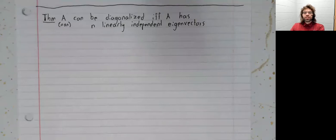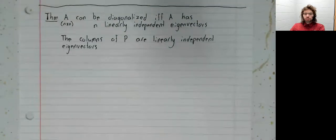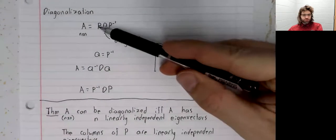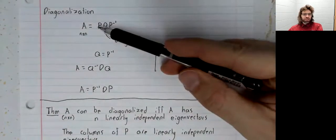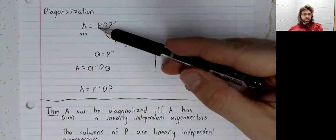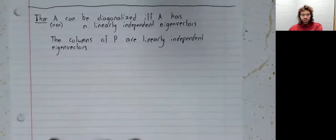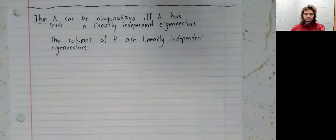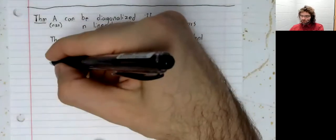In fact, we can go further. The columns of P, this matrix that appears in the diagonalization, are linearly independent eigenvectors.